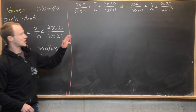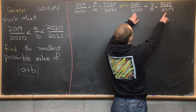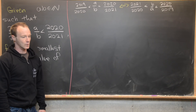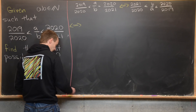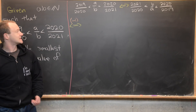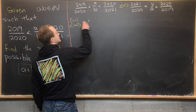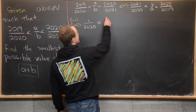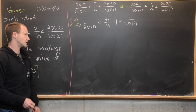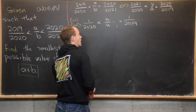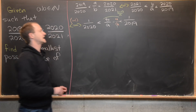Now we can subtract one from all parts of this inequality. Notice that each of the bounds hugging b/a are very close to one, so subtracting one will simplify things. We get: 1/2020 < b/a − 1 < 1/2019. Since one can be written as a/a, the middle term becomes (b − a)/a.